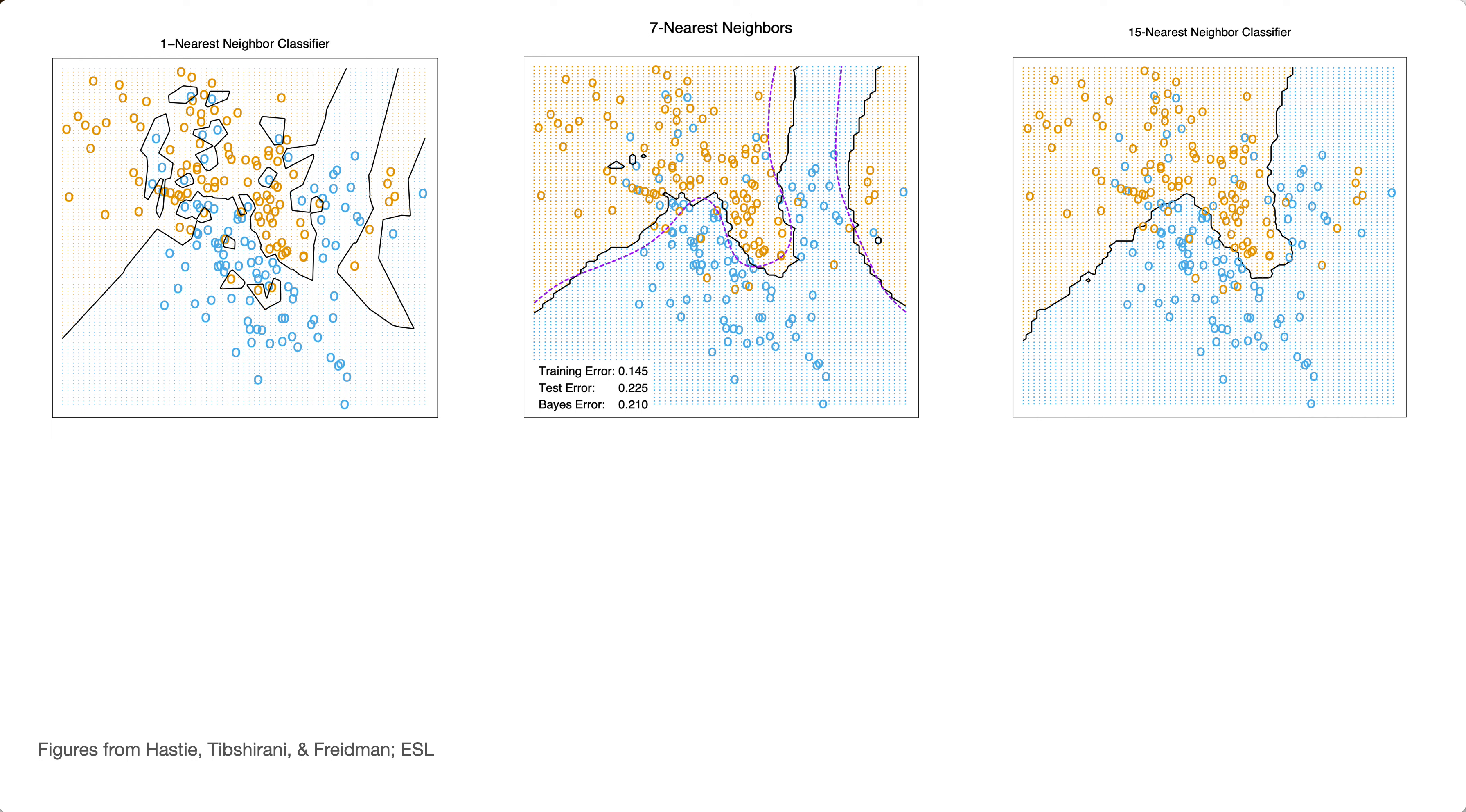Think about what happens when K becomes the size of the data set. I'll let you think about that for a second. What happens? Yep. You're right. When K is the size of the data set, you just get a majority vote and every single data point gets labeled as the most common class. And there is no votes ever for anything else.